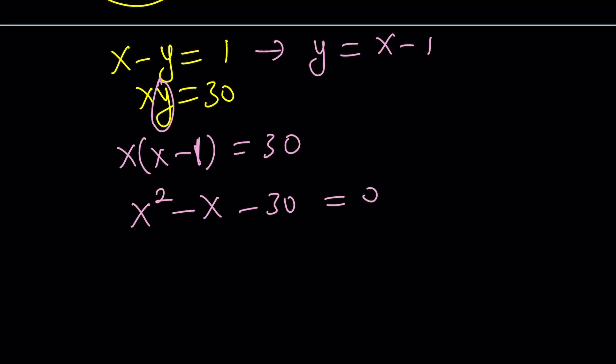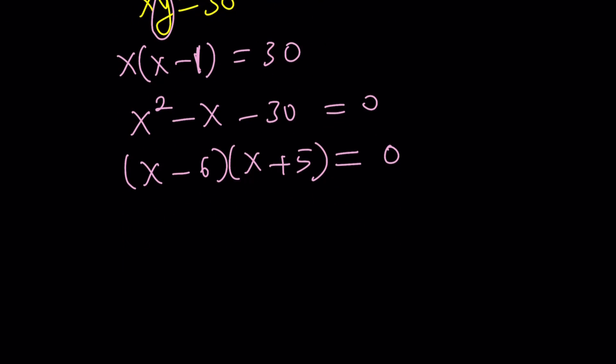So from here now we can factor it. I think we can use factoring. We deserve it, right? x minus 6 times x plus 5 equals 0. And then from here we get two solutions. x equals 6 and x equals negative 5. Awesome. We've got two solutions. How do you find the y values?